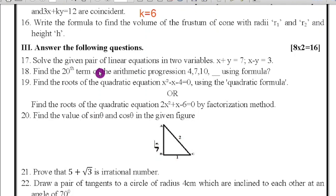Question number 19: find the roots of the quadratic equation x² - x - 4 = 0 using the quadratic formula. We know the quadratic formula: x = [-b ± √(b² - 4ac)] / 2a. Or find the roots of the quadratic equation 2x² + x - 6 = 0 by factorization method.